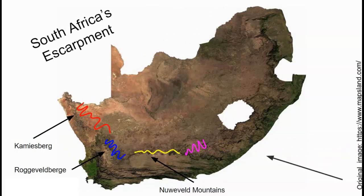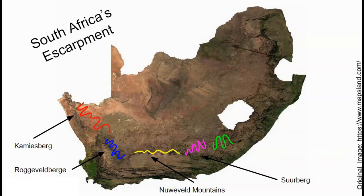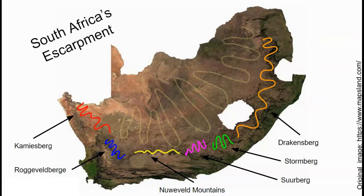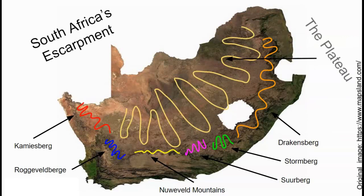Southwest of Lesotho we have the Stormberg, and then the Lesotho border towards Polokwane. That entire region is obviously the Drakensberg mountains, which you're quite familiar with by now. The raised area inside the border of the ranges is the plateau, and this area ranges between 1,000 and 2,000 meters in altitude.